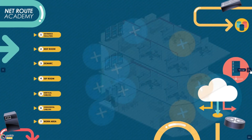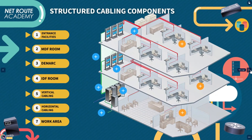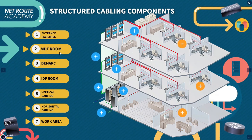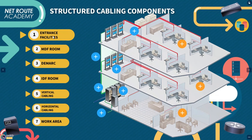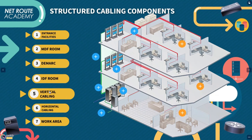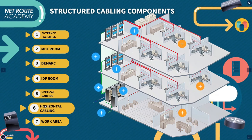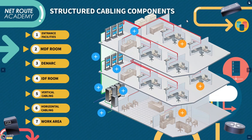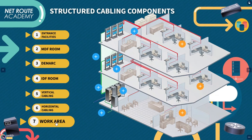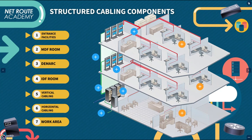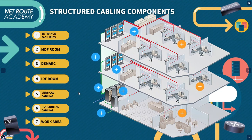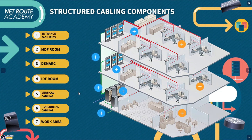Structured cabling is a standardized approach to designing and installing a cabling infrastructure for communication systems in a building or campus. The main components of structured cabling are the following: entrance facilities, MDF room, demarcation point or D-mark, IDF room, vertical cabling, horizontal cabling, and lastly the work area. These components work together to provide a standardized and organized cabling infrastructure that supports various communication systems and services in a building or campus.